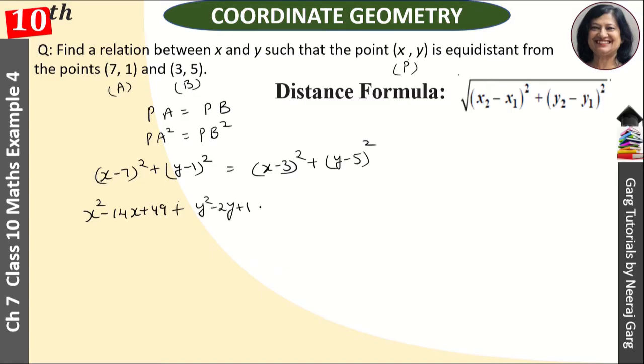Then (x - 3)² becomes x² - 6x + 9, and (y - 5)² becomes y² - 10y + 25.